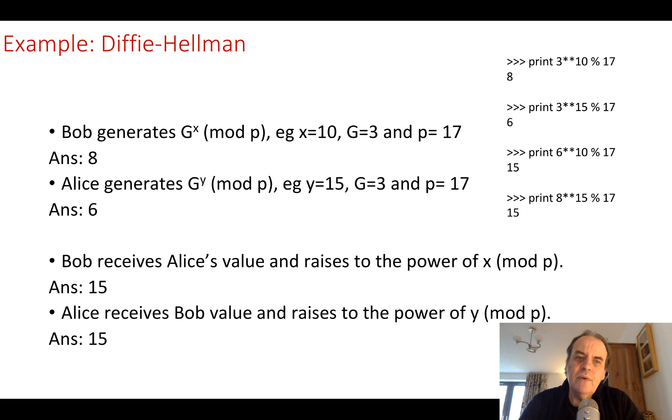As an example, here's the Diffie-Hellman method which uses this technique. Bob generates G to the power of x mod p. So both Bob and Alice know the value of g and the value of p, but they will generate their own random values x and y.